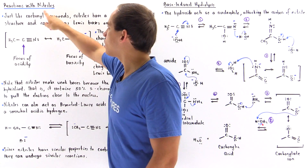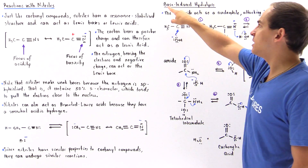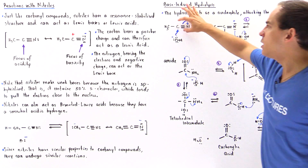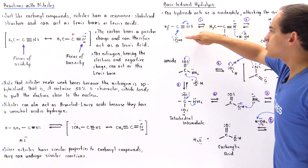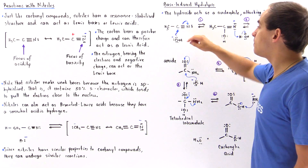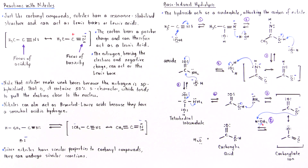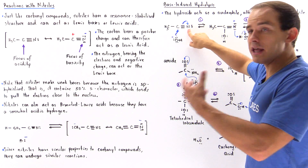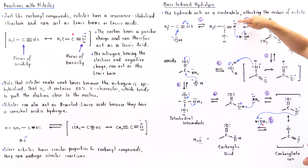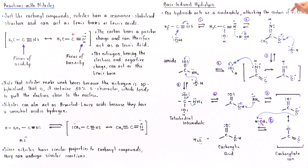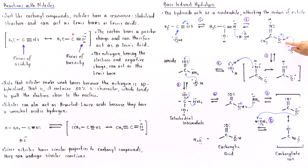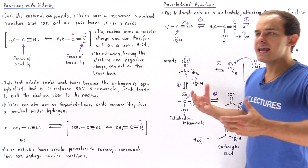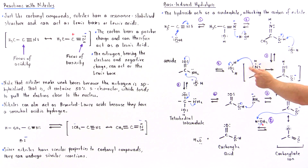In step one, our nitrile compound reacts with the nucleophile — because we're in base, the nucleophile is hydroxide. This carbon is the focus of Lewis acidity, so the oxygen forms a sigma bond between the oxygen and the carbon, and we form a molecule with a negative charge on the electronegative nitrogen atom. In step two, a nearby water protonates our nitrogen. In step three, the hydroxide formed in step two — when water is deprotonated — deprotonates the H atom, forming a resonance-stabilized structure with delocalization of negative charge between the oxygen and the nitrogen atom.